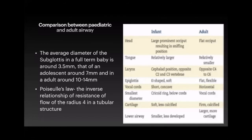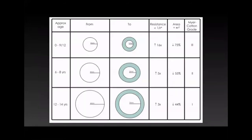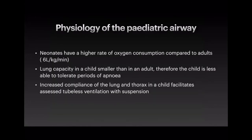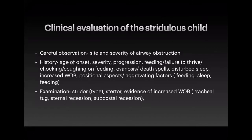The pediatric airway increases in size as we get older, but any swelling can have a huge impact on overall airway diameter — children with a viral illness will have a considerably smaller airway. Neonates have a much higher rate of oxygen consumption compared to adults, smaller lung capacity, and are less able to tolerate apnea. However, they have increased compliance, which is why children undergoing MLBs are able to ventilate and breathe spontaneously.